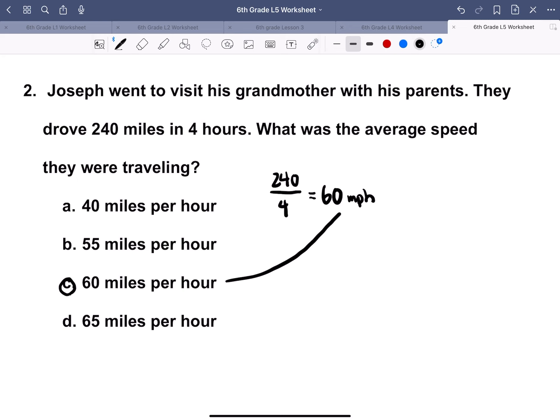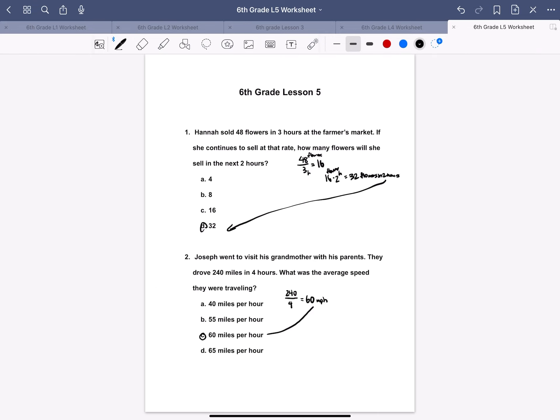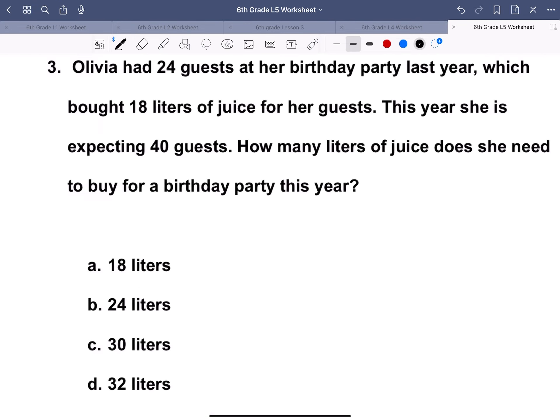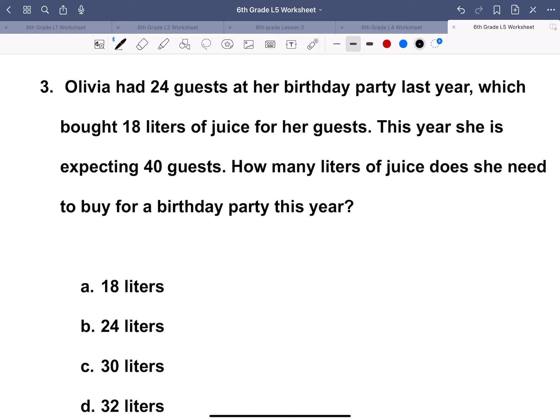The next one, we have three. Olivia had 24 guests at her birthday party last year, which bought, in which she bought 18 liters of juice for her guests. This year she is expecting 40 guests. How many liters of juice does she need to buy for her birthday party this year?